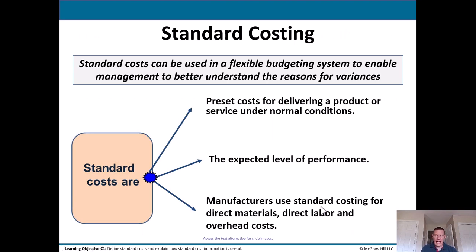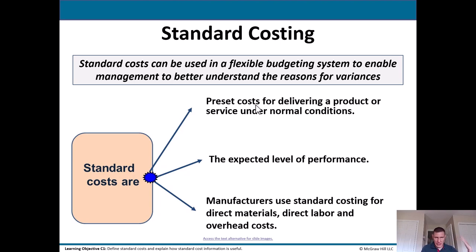Now let's talk about standard costing. Standard costs can be used in a flexible budgeting system to enable management to better understand the reasons for variances. Standard costs are preset costs for delivering a product or service under normal conditions — basically costs figured out ahead of time: this unit should cost this much, it should take this long to build. Standard costs represent the expected level of performance. Manufacturers use standard costing for direct materials, direct labor, and overhead costs.